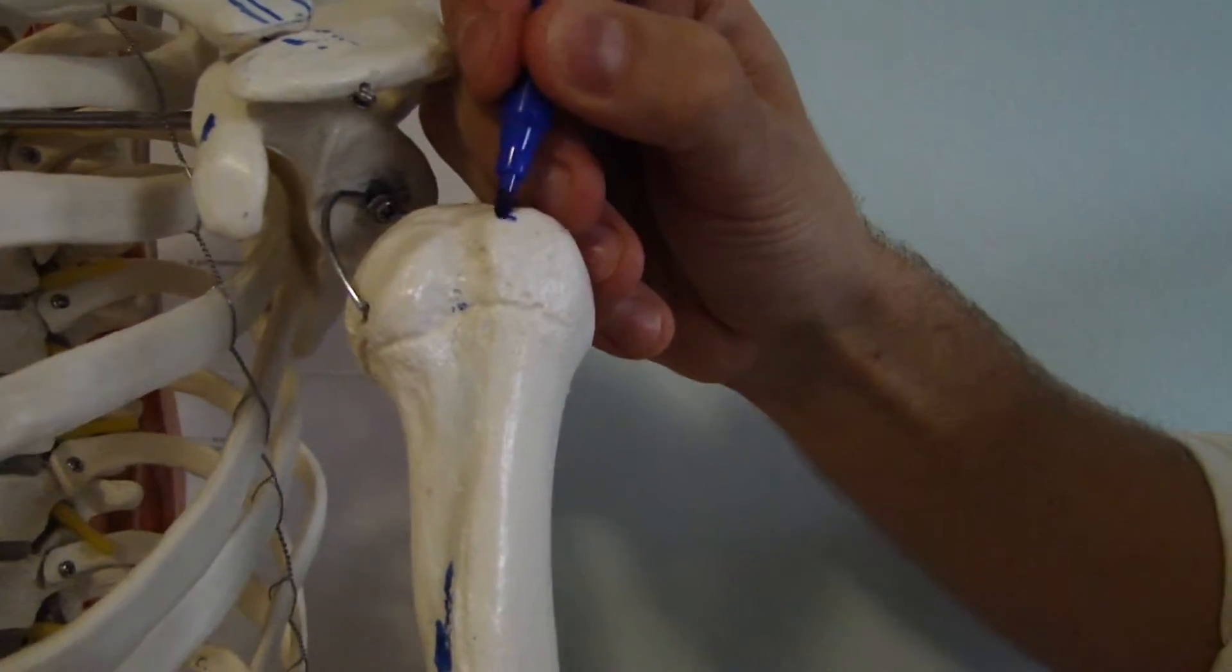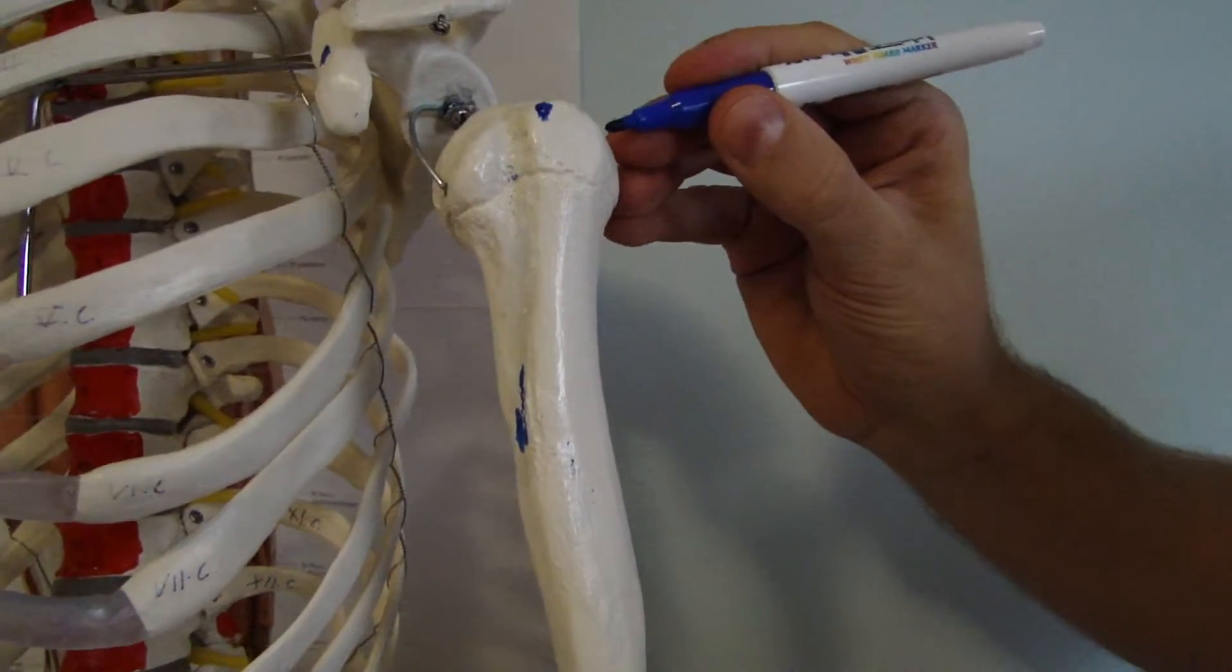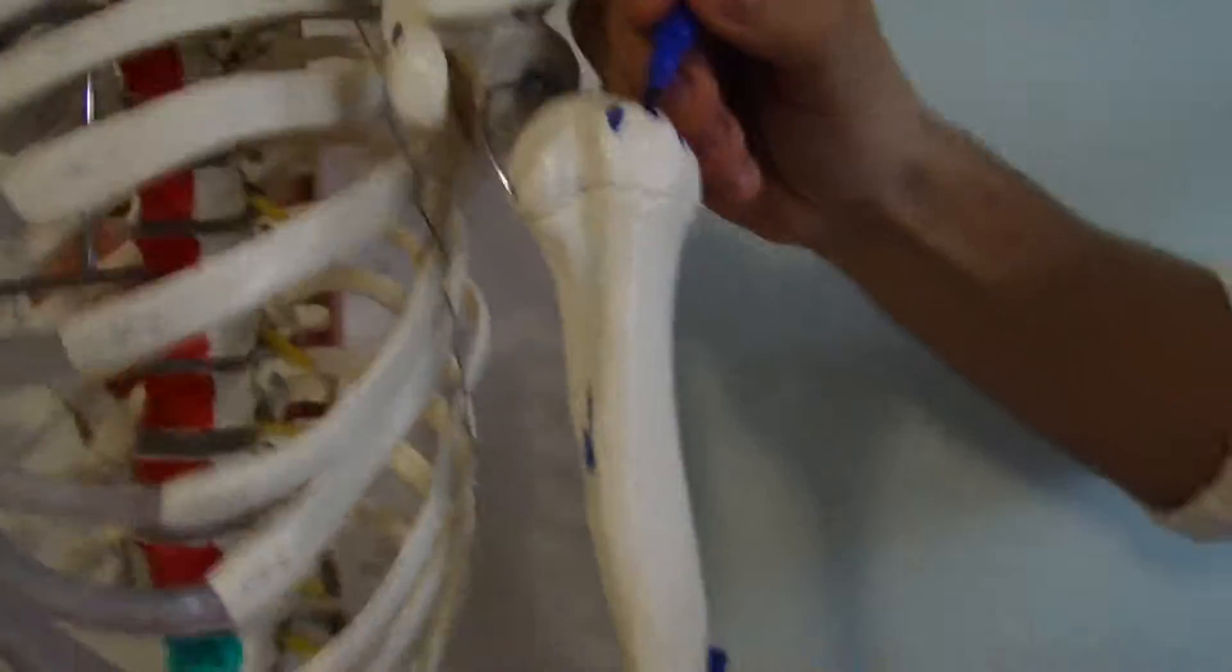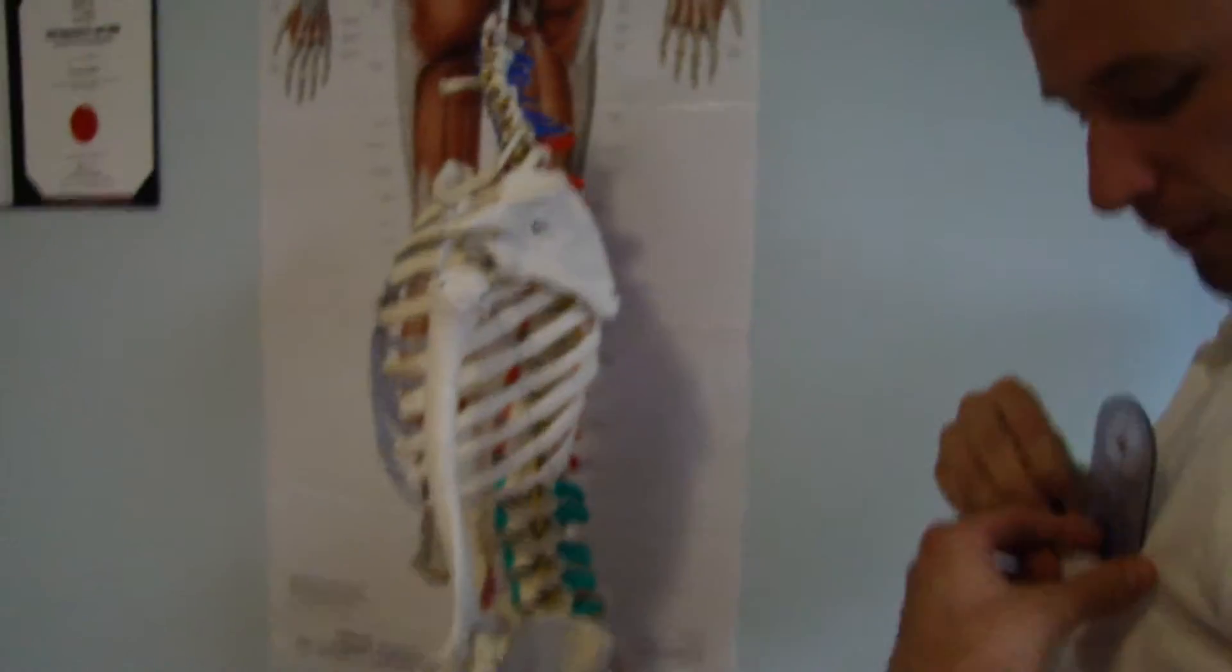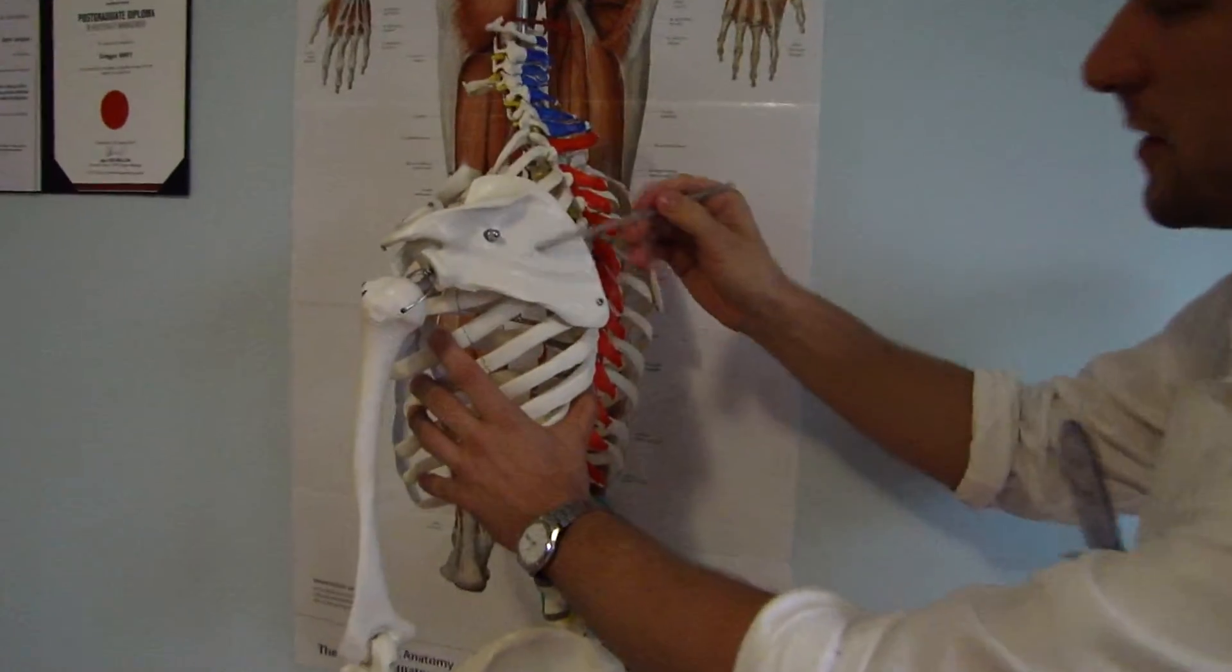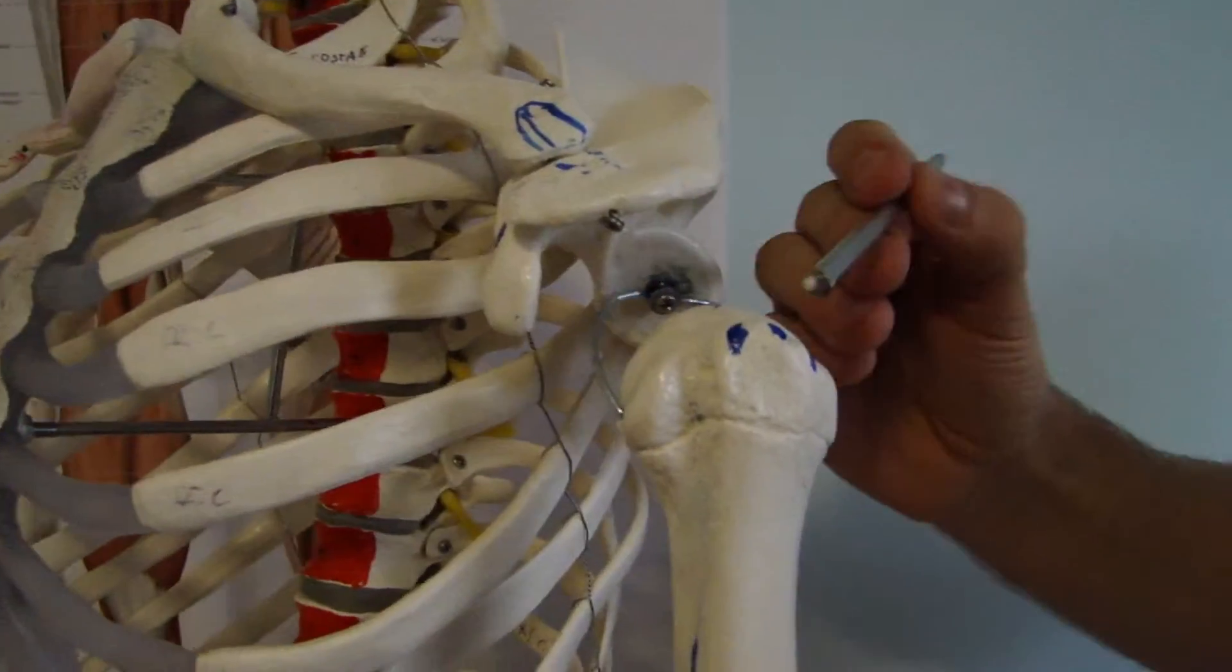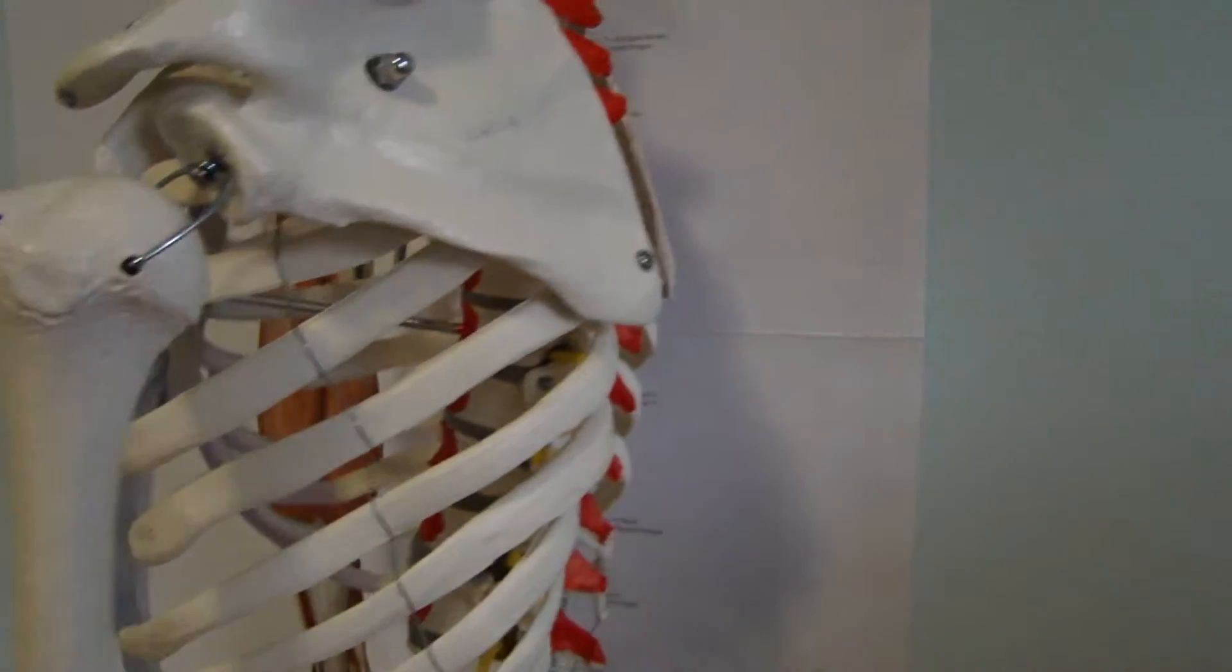I want to show you something now here. We said that here it's an insertion of supraspinatus. Here we said this is insertion of teres minor. Then here it will be insertion of infraspinatus. So now we're focusing on infraspinatus. Infraspinatus fossa, posterior view and inserts on greater tuberosity of humerus. Suprascapular nerve is nerve supply for infraspinatus.